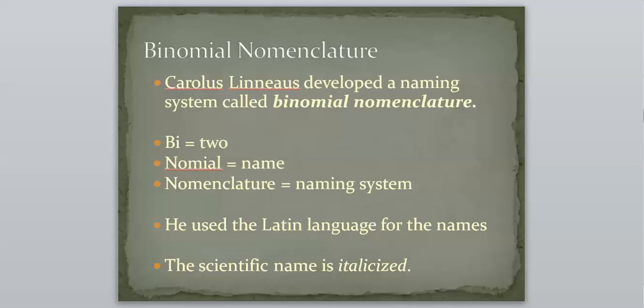As you guys know, the word bi, like a bicycle, means two. Nomial kind of almost has the same sounding as name. So two name, and then nomenclature would be naming system. So this system that Linnaeus came up with, it just means two name naming system. So don't get freaked out when you see binomial nomenclature, because it's really not that big of a deal.